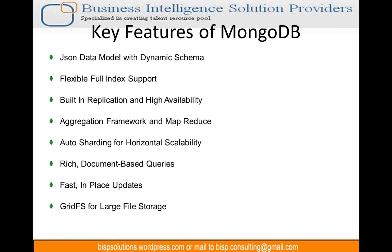To sum up the key features: MongoDB involves a JSON data model and supports indexing. Three things that stand out are replication, sharding, and the aggregation framework. It is very SQL-like, and GridFS is used for storing large files, dividing them into chunks stored across different nodes.